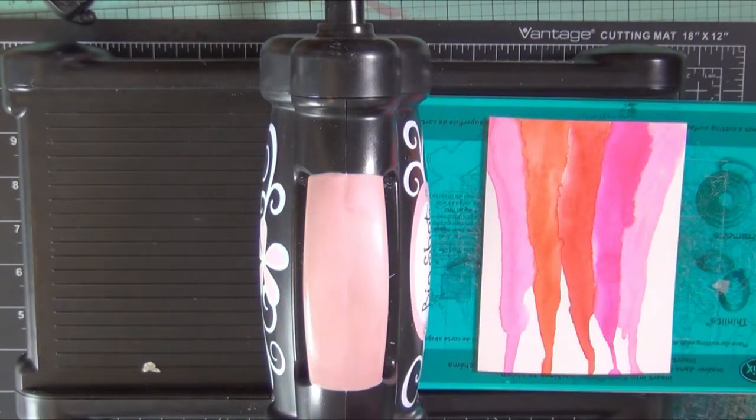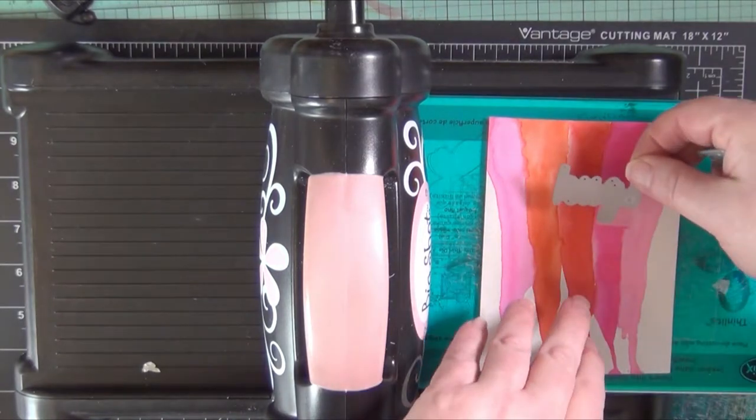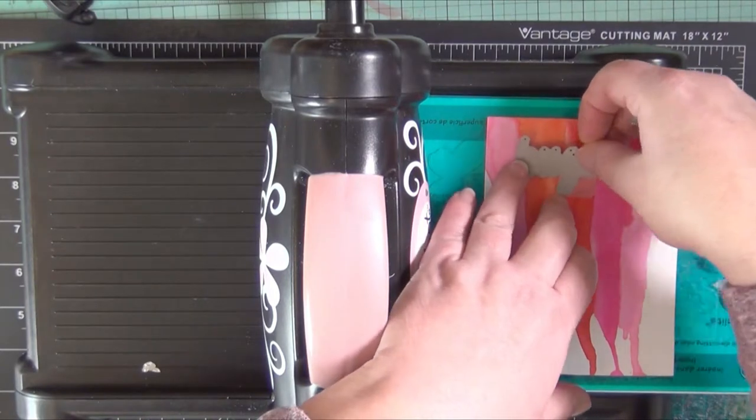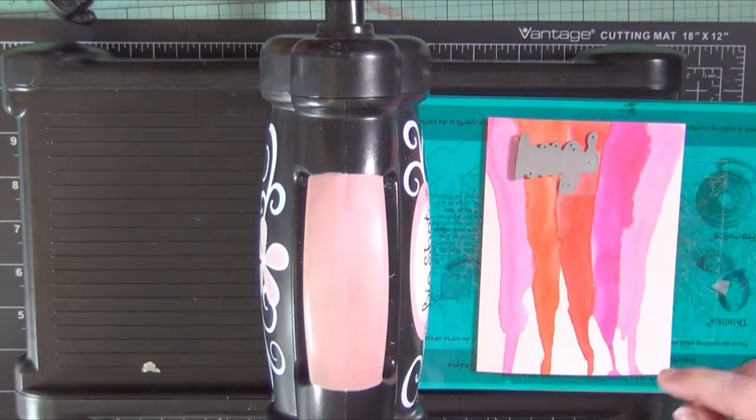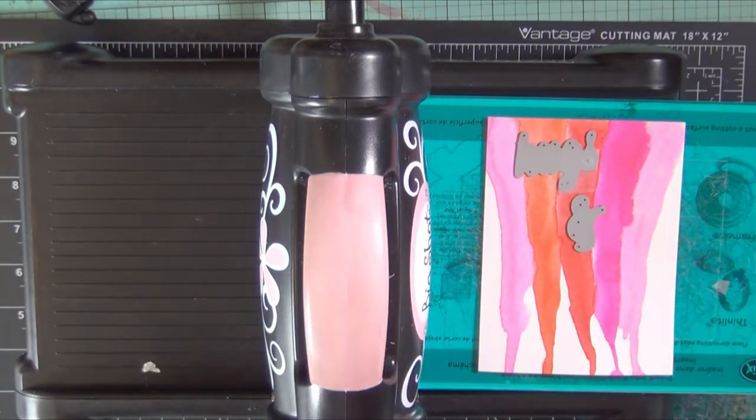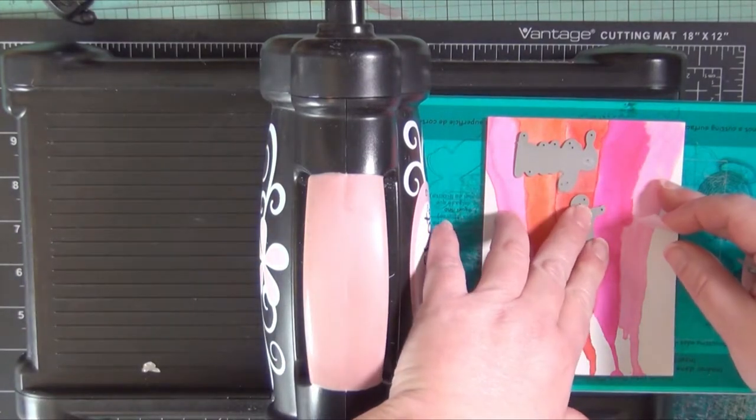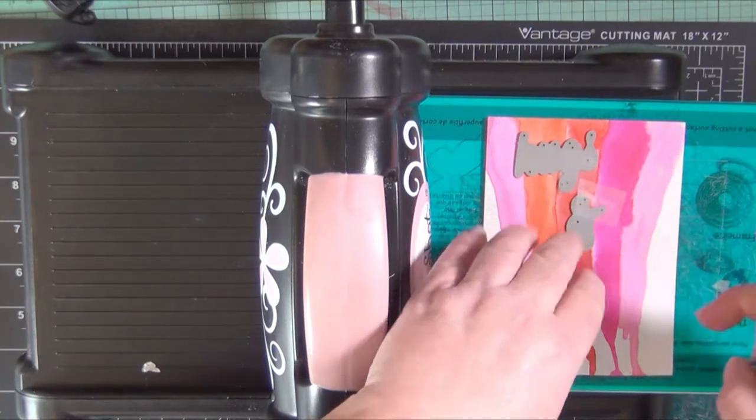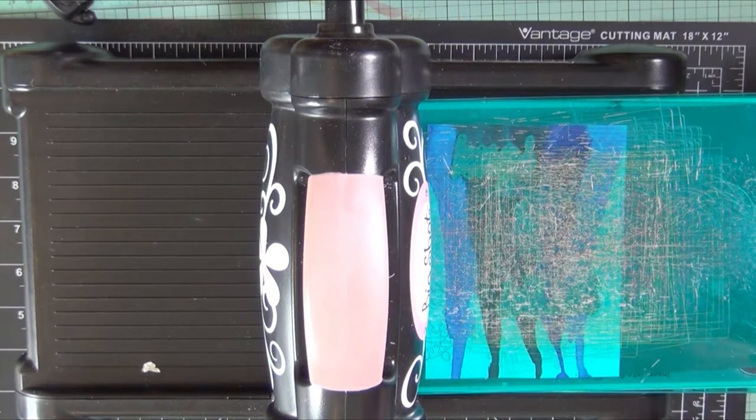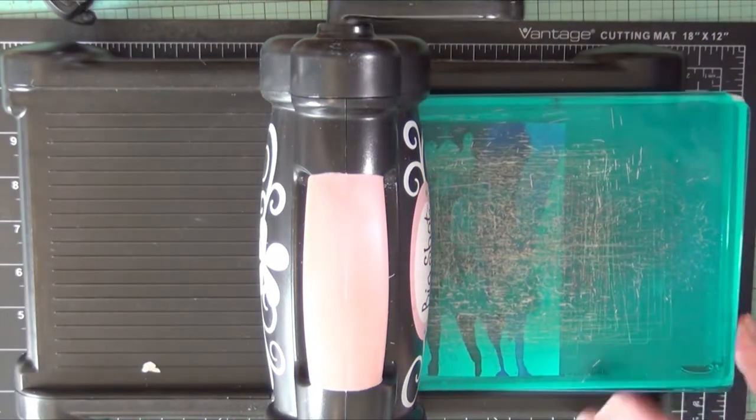The next step is going to be die cutting directly into the watercolor paper and I've pulled out three die cut words. I've used hugs and kisses and I'm using the removable scotch tape to tape them into place so that when I die cut them they're not shifting all over the place. Through the magic of video I'm going to run it through and voila!